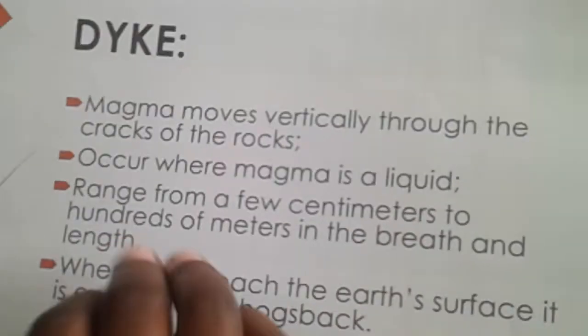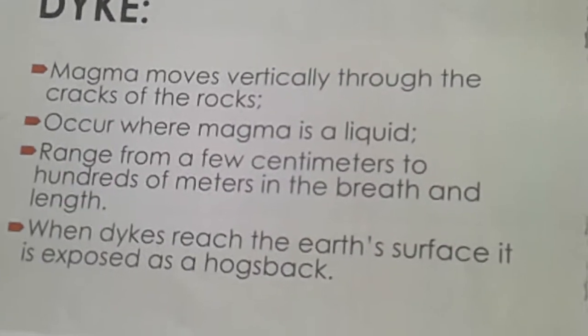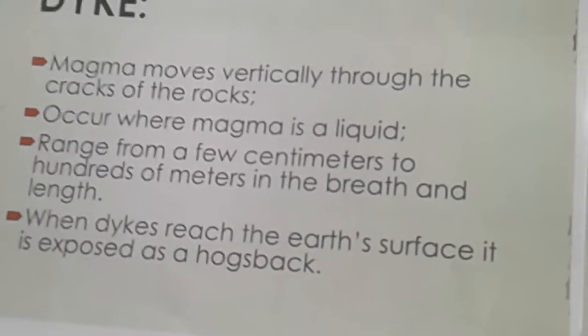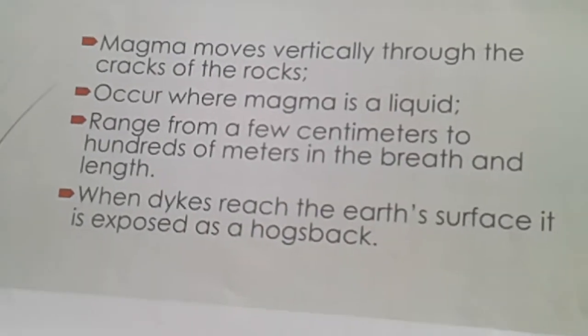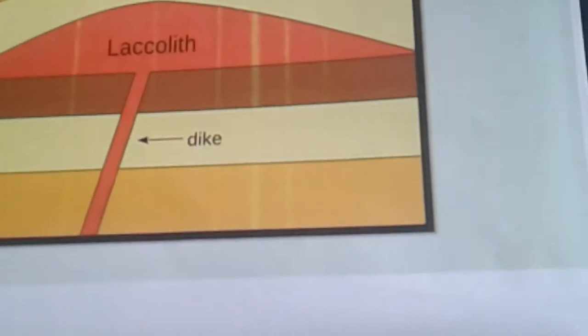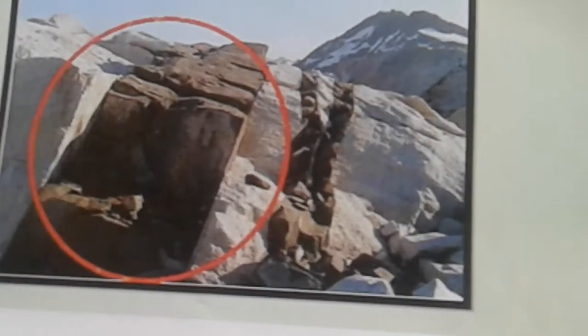Dykes are vertical intrusions — magma moves vertically, especially through the cracks of rocks. When dykes are formed and reach the surface they are sometimes exposed as hard rock specs. These are the dykes we are talking about — vertical intrusions. Most of the time they form a hard rock. Here is an example of a dyke in the real world.